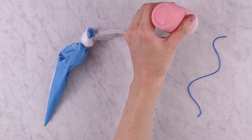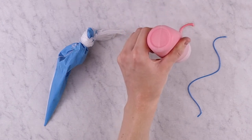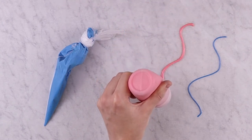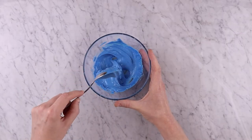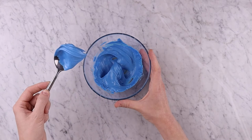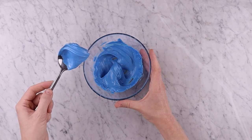Line icing is an icing of thicker consistency which should be similar to toothpaste. As you can see when you mix the line icing together it should have stiff peaks, holding its form quite well and not sinking back into the rest of the icing.